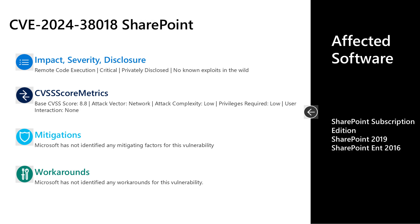The third and final vulnerability I'll cover today is CVE-2024-38018. This is a critical remote code execution vulnerability, privately disclosed with no known exploits in the wild. It has a CVSS base score of 8.8. The attack vector is over the network, attack complexity is low, low privileges are required, but no user interaction is required to leverage this vulnerability. There are no documented mitigations or workarounds. The affected software is SharePoint Server Subscription Edition, SharePoint Server 2019, and SharePoint Enterprise Server 2016. If you have any of those three versions of SharePoint, there is an update this month to resolve this vulnerability.